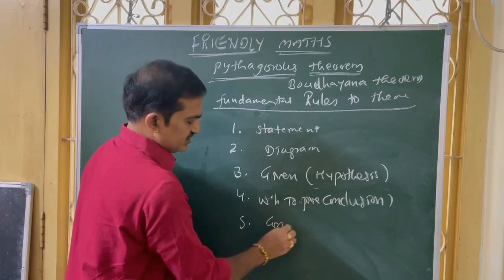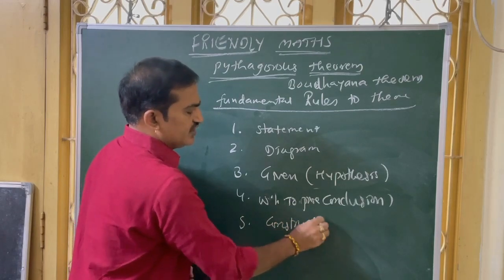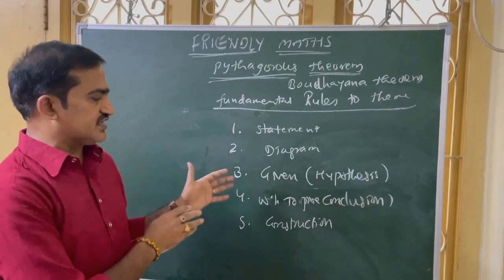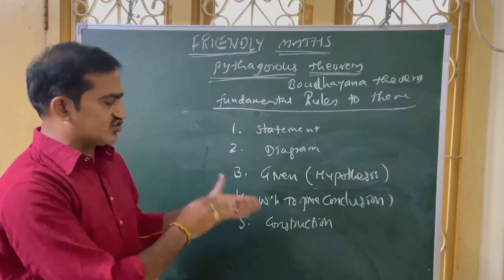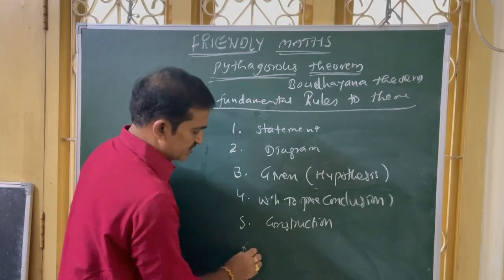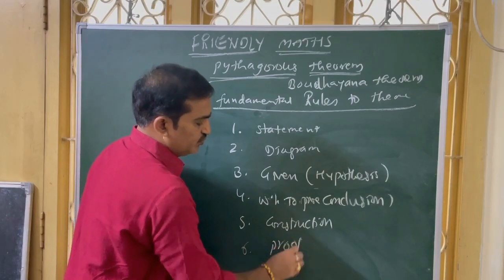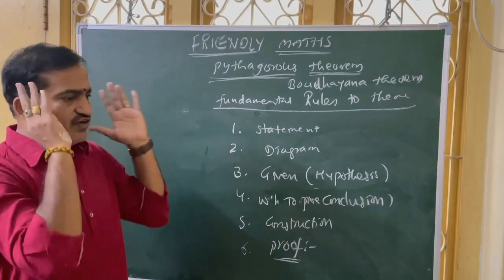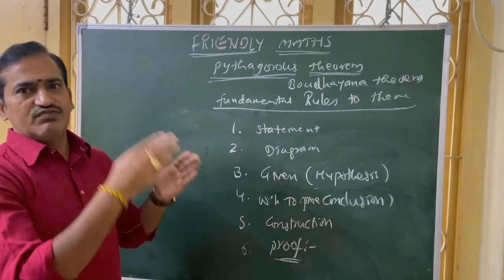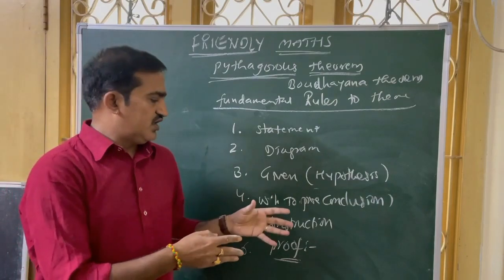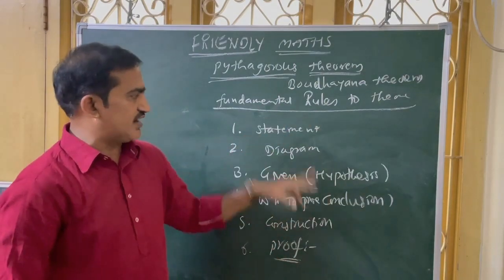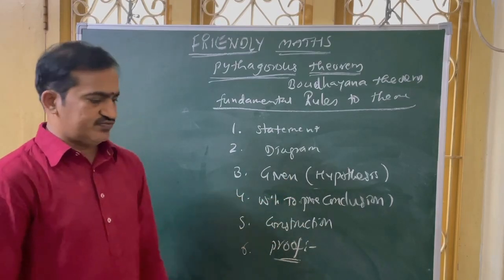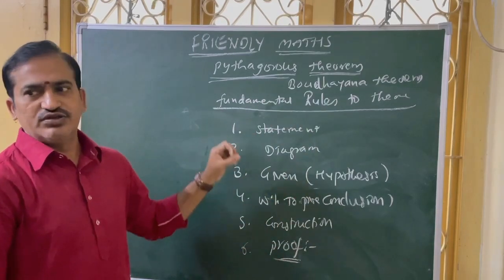Next is construction. Construction is a special part — it is not required for all theorems. Only if some theorems require construction, then we have to go with it. Then, the last and major part is the proof — how to prove it. When we know the proof, then only we can proceed in a systematic manner. The systematic manner is: Statement, Diagram, Given, What we have to prove, Construction, and Proof. These are the fundamental rules to start a theorem.